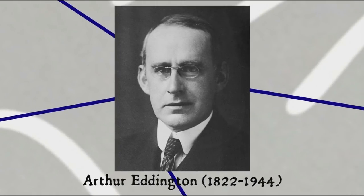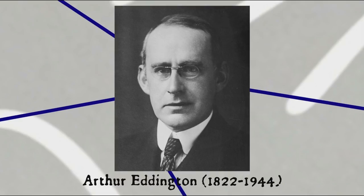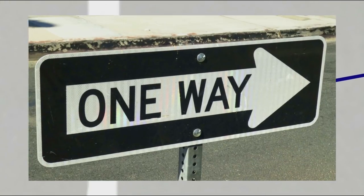The phrase time's arrow was coined by English astronomer, physicist, and mathematician Sir Arthur Eddington in 1928 to describe the asymmetry of time, always flowing from past to future, though the similar phrase arrow of time had already been used in 1917, colloquially to refer to the ever-flowing nature of time.